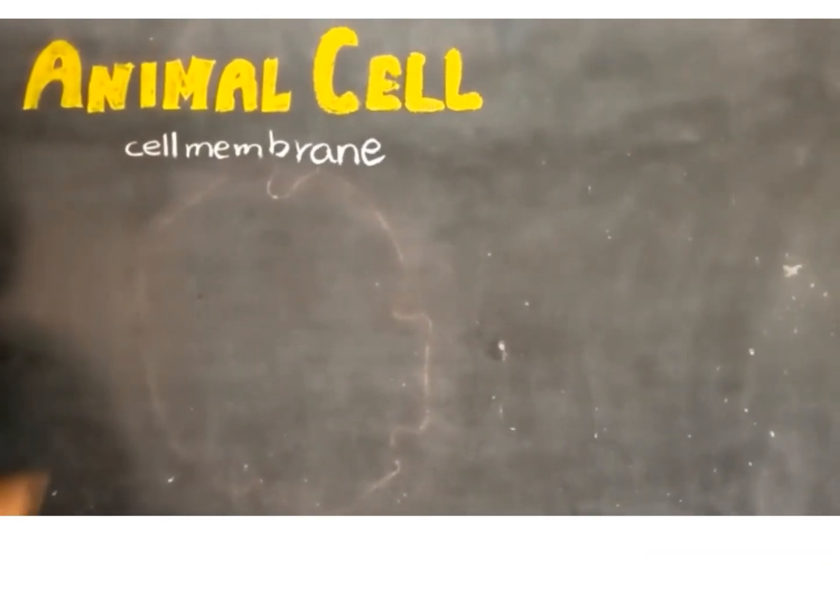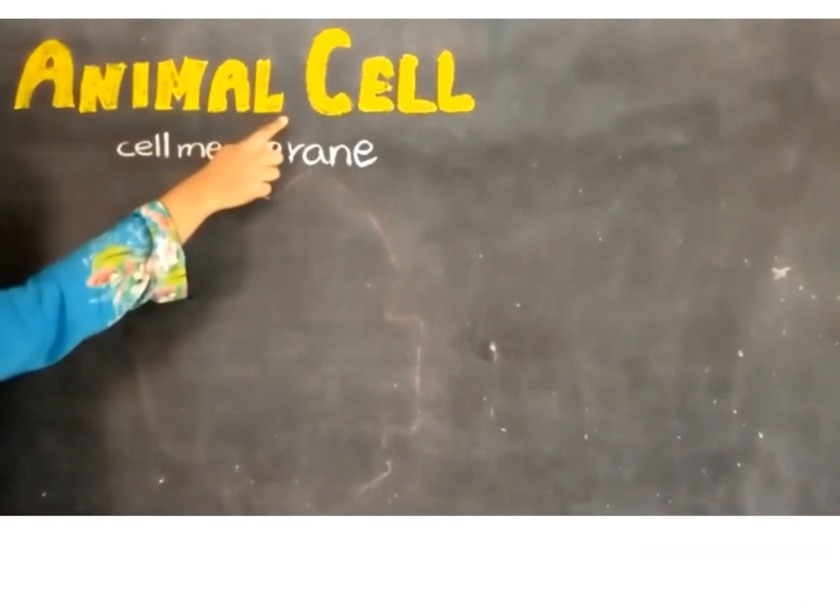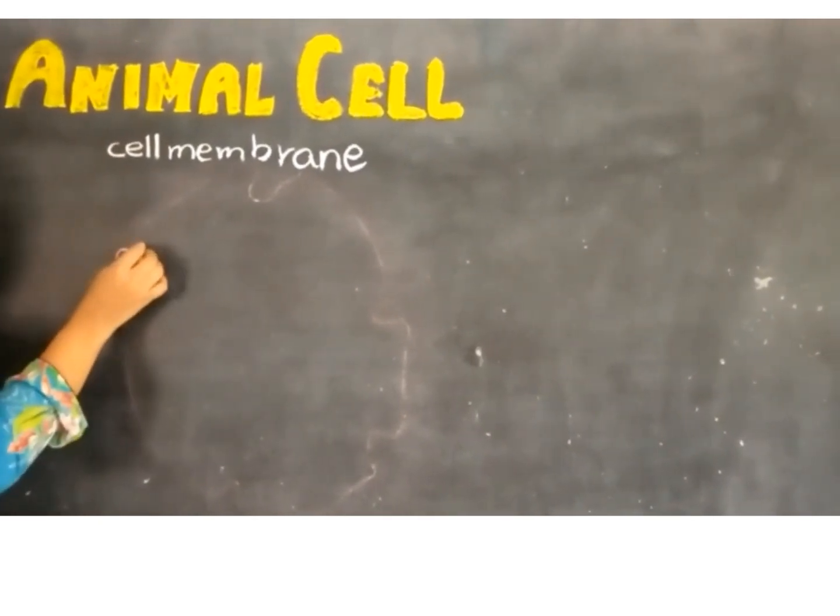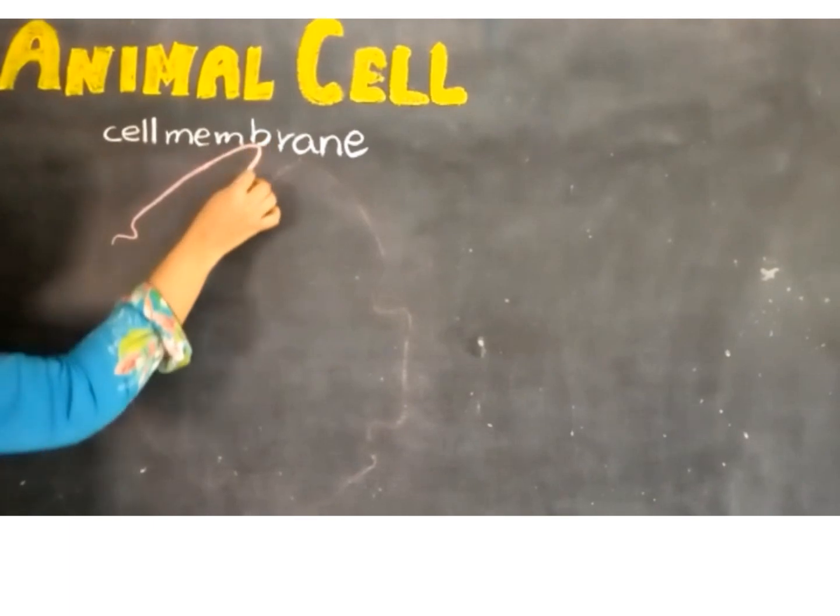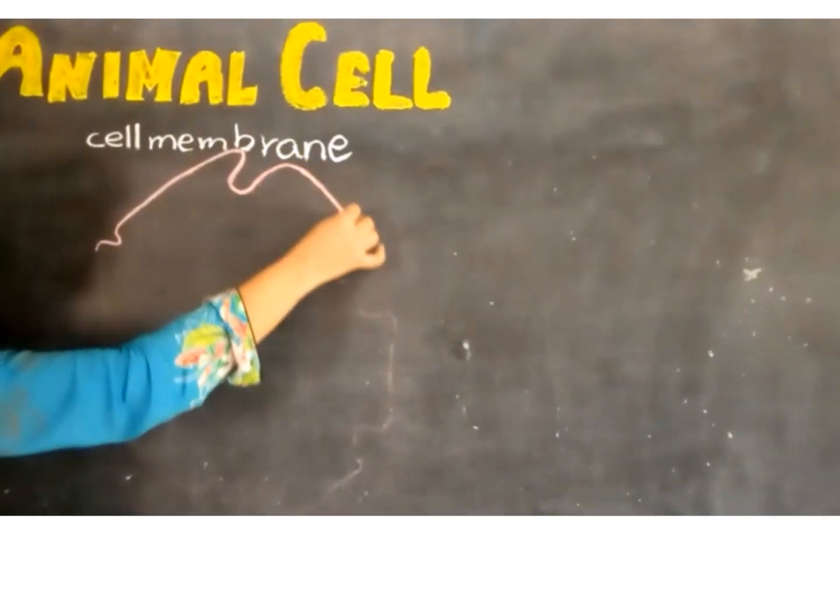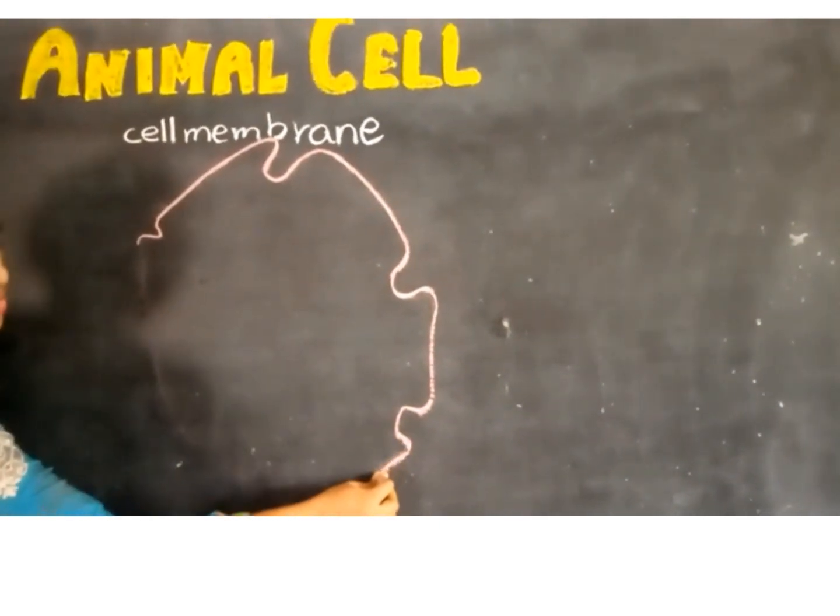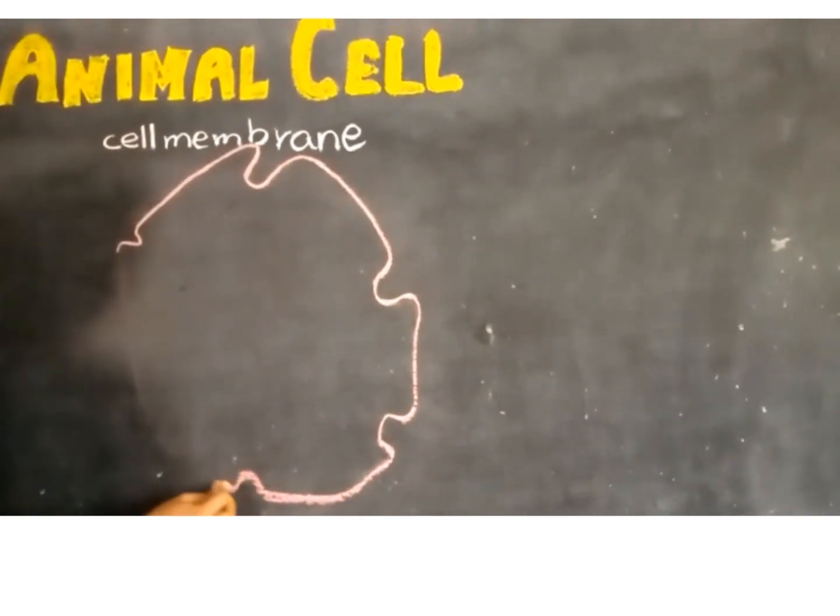Now we will learn how to draw the diagram of the animal cell and we will discuss the various organelles that are present inside the animal cell. The outermost layer of the animal cell is known as the cell membrane, also called the plasma membrane.